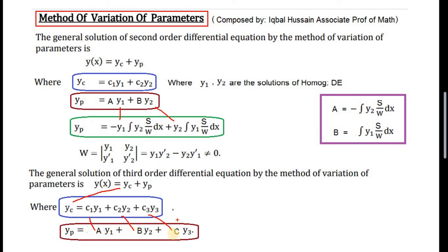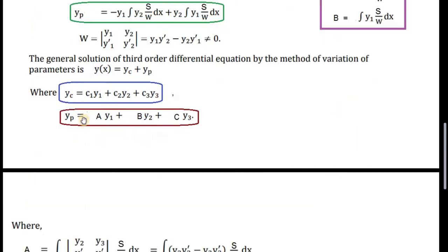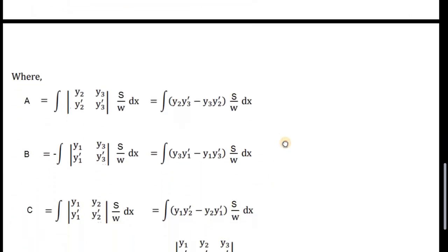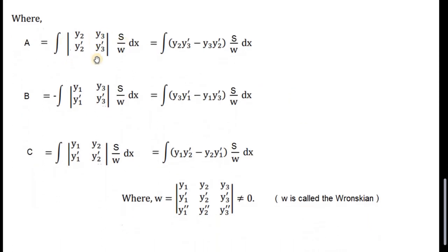We need to determine the value of a, the value of b, and the value of c, just as we determined values of a and b for the second order case. For this particular integral we need values of a, b, and c, which can be determined by three formulas. The sign pattern is: plus for a, minus for b, and plus for c.